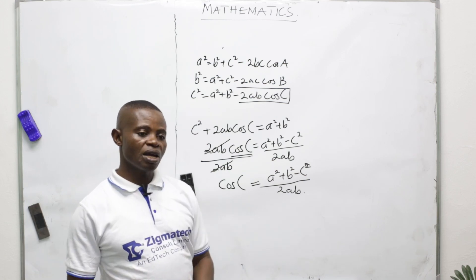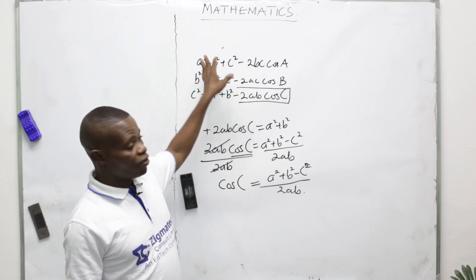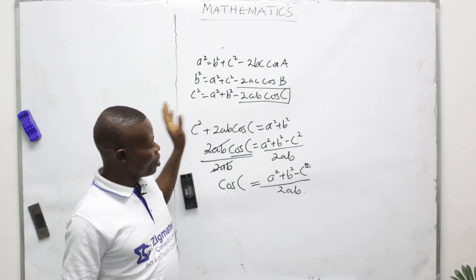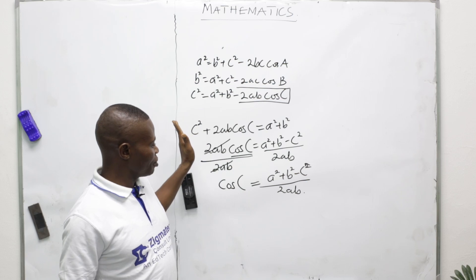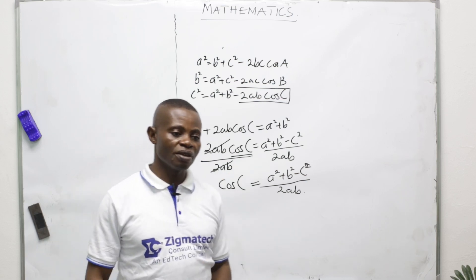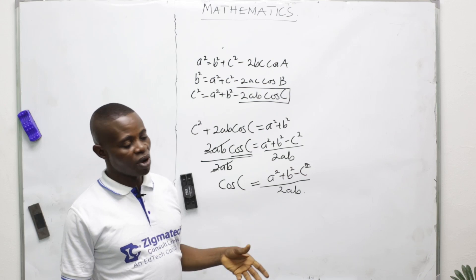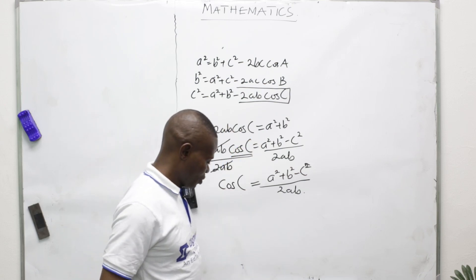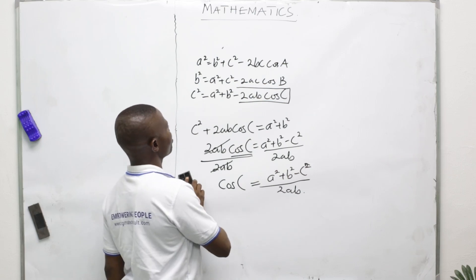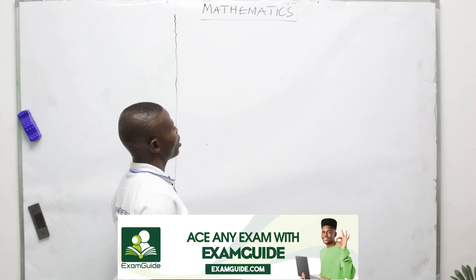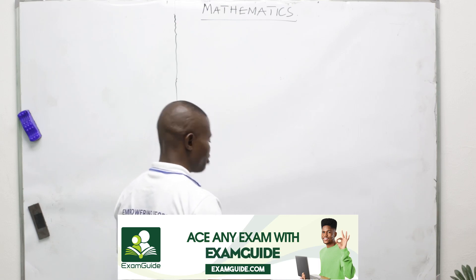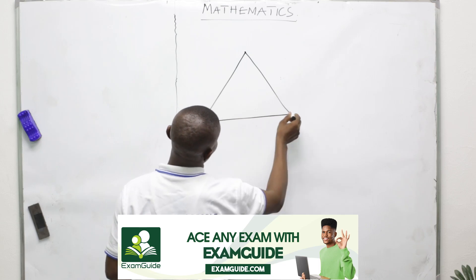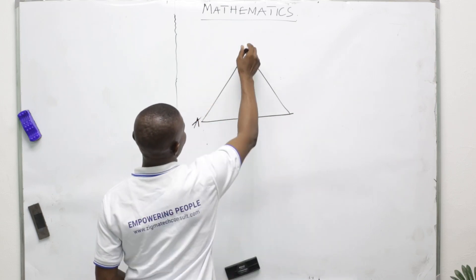So this is the cosine rule formula for finding an angle. Watch it very well and take note of it, because when we start to solve bearing problems, you are going to make use of this formula. Now, talking about the sine rule — given a triangle ABC.